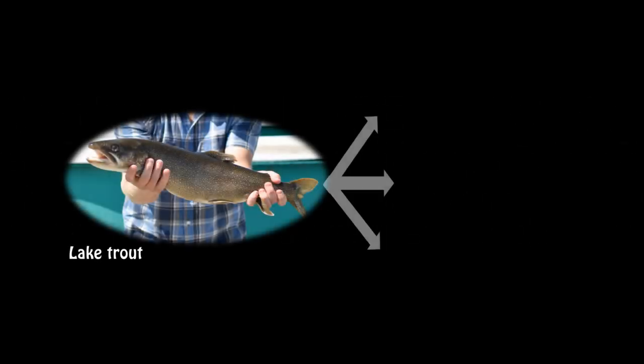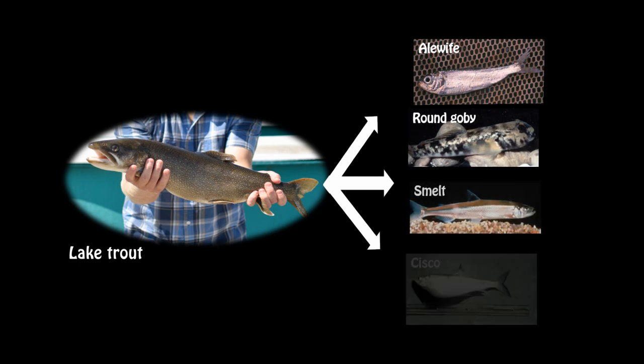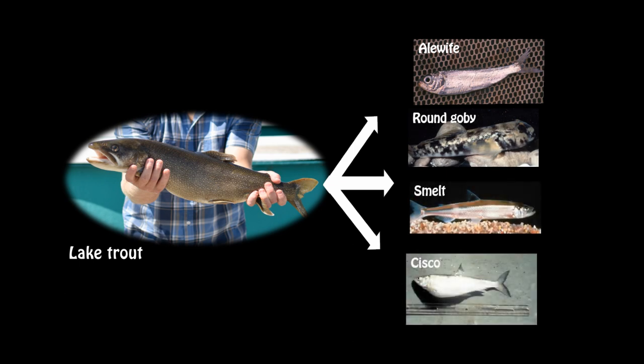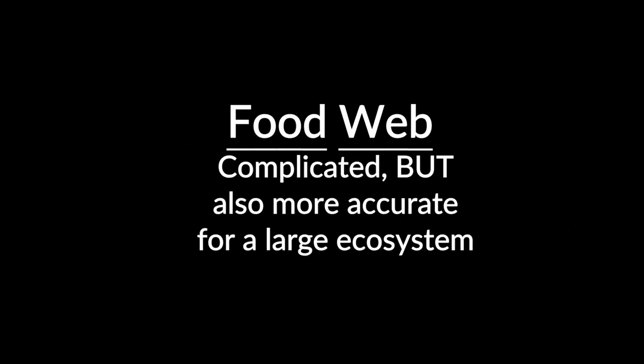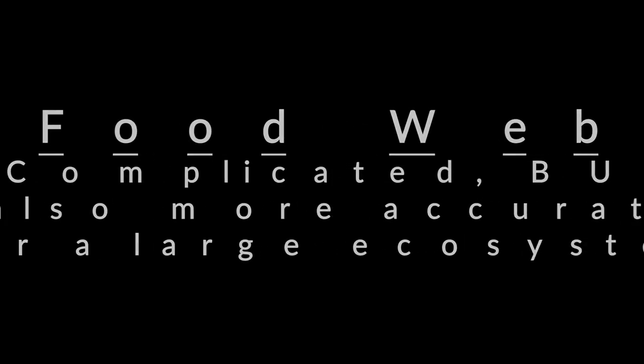Fish do not usually eat just one food source. Rather, they feed on multiple species, making things much more complex. So instead of a simple chain, we can start thinking about a more complex set of connections, like a web. For the rest of the video, the term I will use is food web.